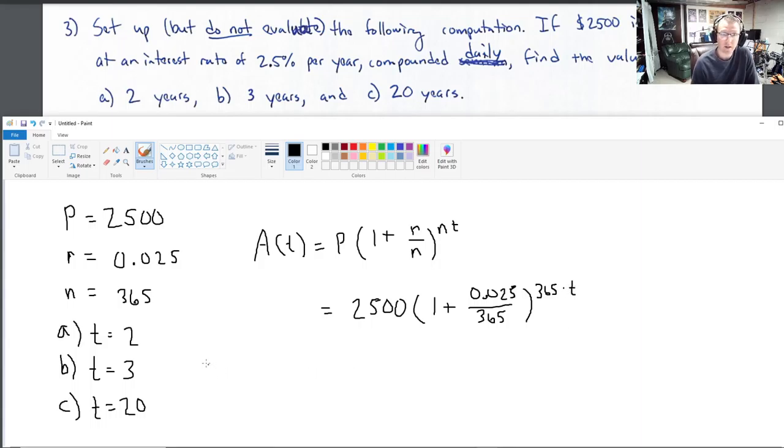And so, what we have here with the values we've taken from the problem is 2,500 times 1 plus 0.025 over 365 raised to the 365 times T power. So, now for part A, what do you do? You literally erase this T and you put a 2. For part B, you erase the T and you put a 3. For part C, you erase the T and you put a 20.